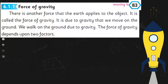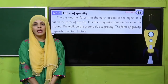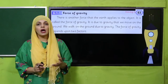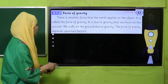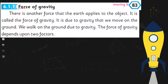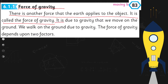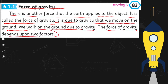Now is the time for reading. Open page number 83 in your Science 4 books. Let's start the reading: Force of gravity — there is another force that the earth applies to objects. It is called the force of gravity. It is due to gravity that we move on the ground. The force of gravity depends upon two factors.